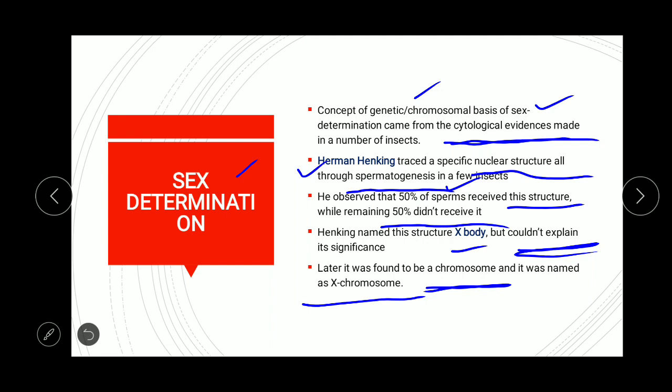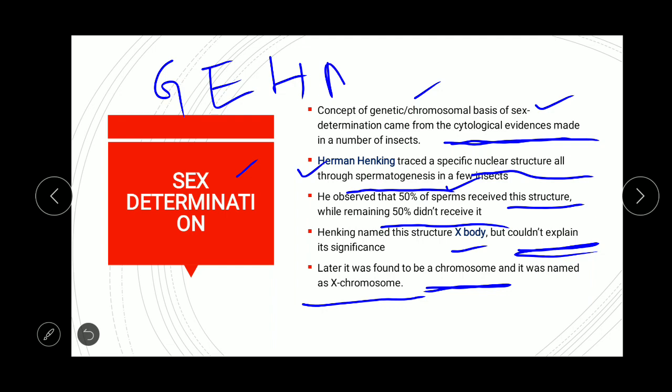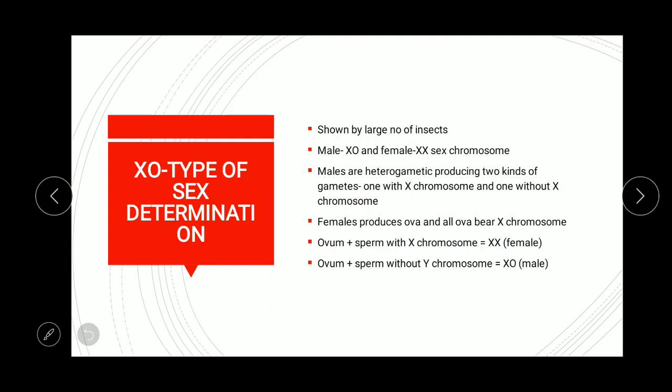Broadly speaking, there are four modes of sex determination: genetically, environmentally, hormonally, and metabolically. However, in our syllabus only the genetic mode is covered, so we will restrict our discussion to genetic sex determination.